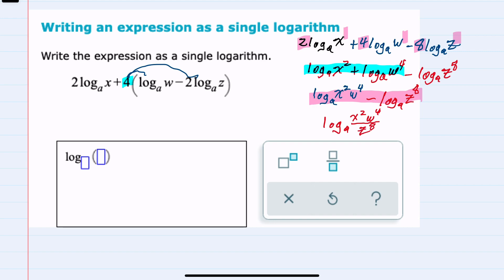So after all of the simplification, our log is still a log base a, and x squared w to the 4th over z to the 8th is what we would be taking the log of.